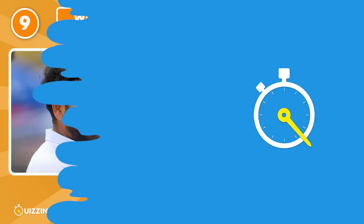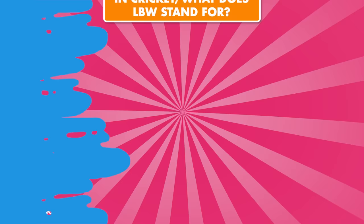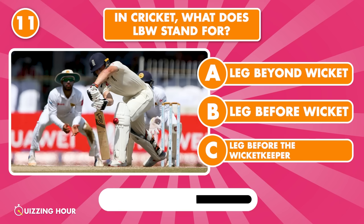What is the term for a batsman getting out on the very first ball they face in an innings? Golden duck. In cricket, what does LBW stand for? Leg Before Wicket.